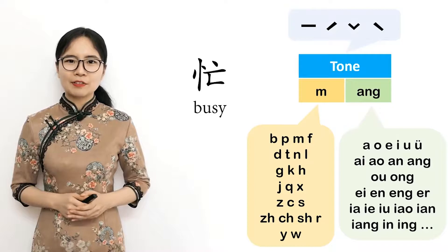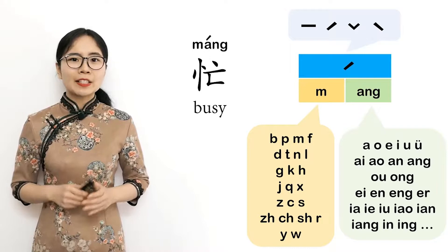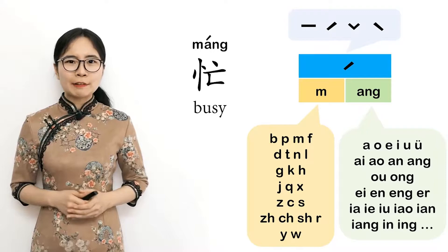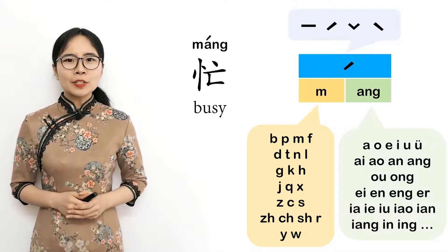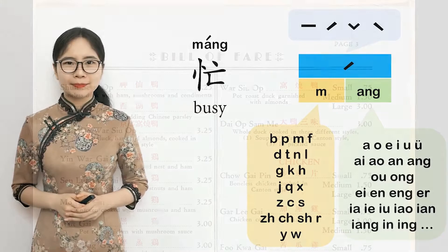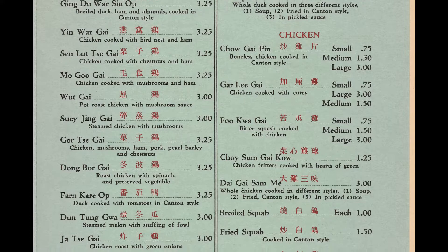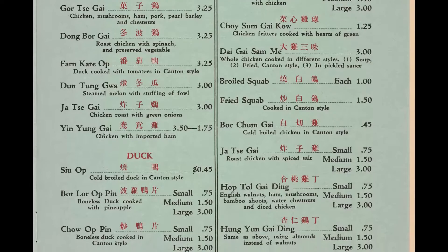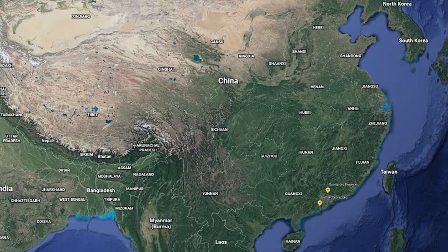Pinyin is now the international standard for transcribing the Chinese written language based on the pronunciation of Mandarin Chinese using Roman script. This replaced the earlier popular Wade-Giles system of transcription — that's why Peking became Beijing. But if you look at Chinese restaurant menus in the United States, they are romanized in a variety of ad-hoc schemes that are not standardized in any way, and the spoken language they're romanized from is not even Mandarin Chinese — it's either Cantonese or Taishanese.